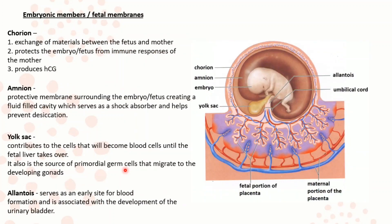After implantation, three germ cell layers are formed in the developing embryo at the end of the gastrulation stage. Extraembryonic membranes begin to appear which surround the embryo. The placenta is formed by the cells of the trophoblast and the adjacent endometrial tissues. There are four extraembryonic membranes which appear after implantation: chorion, amnion, yolk sac, and allantois.